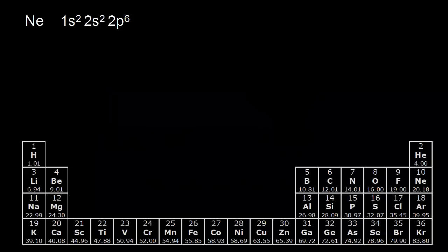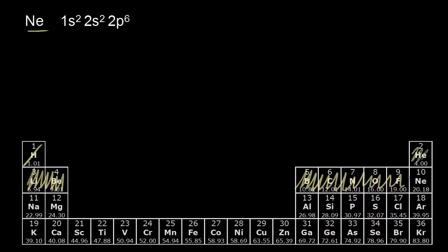We ended the previous video with the electron configuration for neon: 1s2, 2s2, 2p6. That shows you how you can look at the periodic table and run through these electron configurations. For example, this would be 1s1, 1s2, then 2s2 would be here, and then 2p6 brings you all the way over to neon.